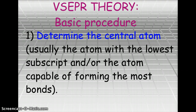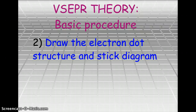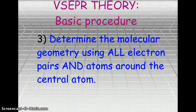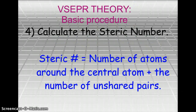So what is the process of using VSEPR theory? The first step is to determine the central atom — usually the atom with the lowest subscript value or the atom capable of forming the most bonds. Then draw the electron dot structure and/or the stick diagram to see how many atoms are bonded to that central atom. Next, determine the molecular geometry using all electron pairs and atoms surrounding the central atom by calculating the steric number: the number of atoms surrounding the central atom plus the number of unshared pairs.